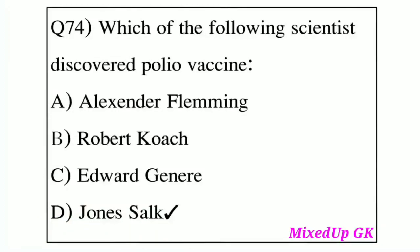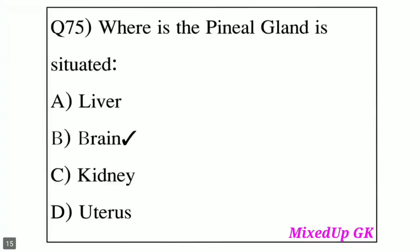Question number 75: Where is the pineal gland situated? Option A: Liver. Option B: Brain. Option C: Kidney. Option D: Uterus. The answer is Option B, Brain. The pineal gland is situated in the brain.